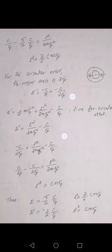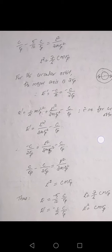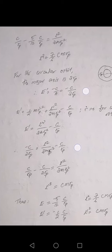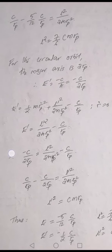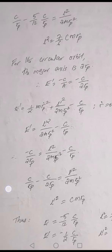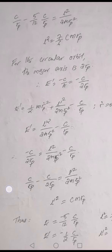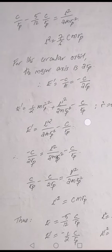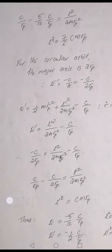For a circular orbit, there is no radial motion, so Ṙ = 0. Therefore E prime = L prime²/(2MRp²) − C/Rp. Since E prime = −C/(2Rp), equating gives: −C/(2Rp) = L prime²/(2MRp²) − C/Rp. Rearranging: C/Rp − C/(2Rp) = L prime²/(2MRp²), which gives L prime² = CMRp.